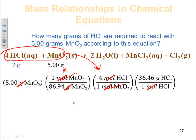So I had to use the molar mass of my manganese 4 oxide and the molar mass of my HCl. Multiplying out, I get my total grams, which is 8.39 grams of HCl.